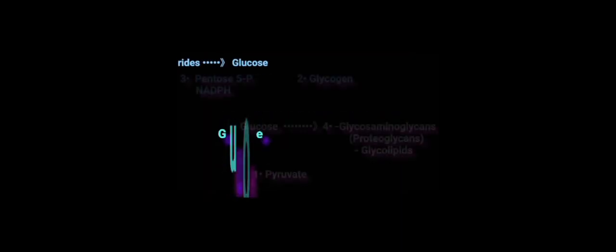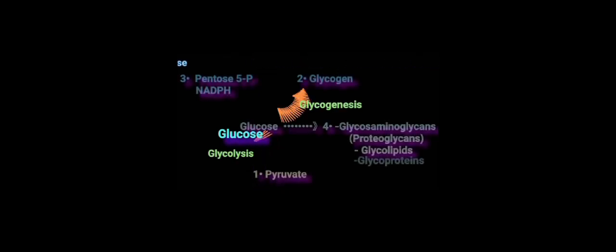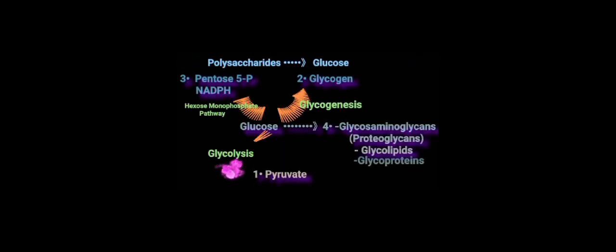Glucose has at least four uses in the cell. The first one is through glycolysis to produce energy and two molecules of pyruvate. The second one is in storage of glucose as glycogen, which occurs in both liver and muscle.